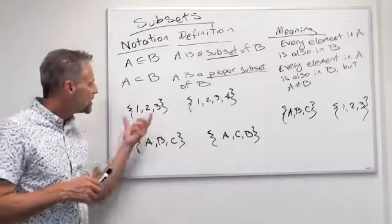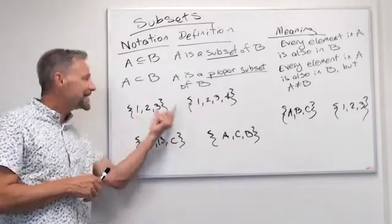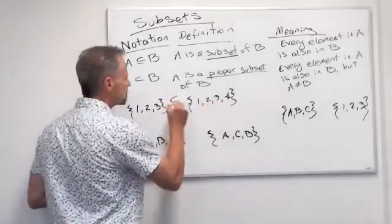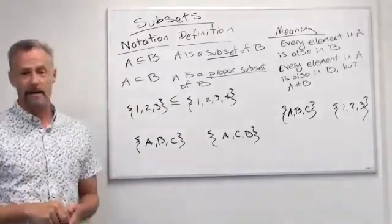So I've got some examples here. If we look at {1,2,3} versus {1,2,3,4}, well, we see every element that's in here is in there, so we know it's a subset. And you may say, 'Wait, Professor Monte, that's a proper subset.' You're absolutely right.